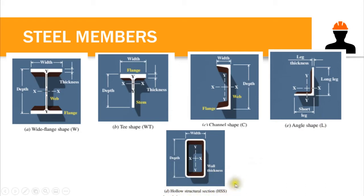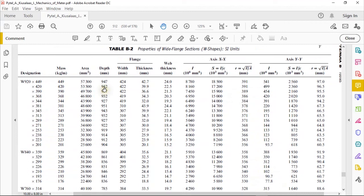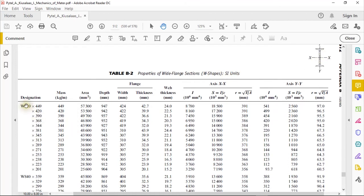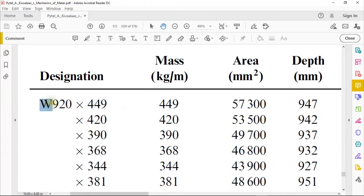We also have the hollow structural section, usually used as a column or beam. In designing steel members we have specifications to follow — the steel table. AISC, the American Institute for Steel Construction, provides a steel manual with specifications for each member shape. In this video I am going to show you the steel table from the book of Pytel and Kiusalaas. The first section is the wide flange section in SI units, with designations starting with W.